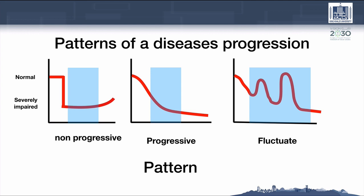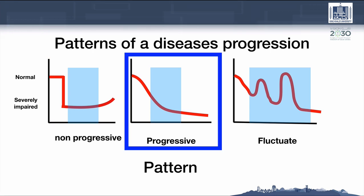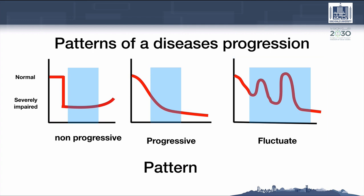You also need to learn about the pattern of disease progression — after the disease started, how would it behave? Disease can be non-progressive or static, meaning it won't really change, and may later start to improve. Diseases may continue to progress in a progressive pattern. Diseases also may fluctuate and change from normal to impairment and then back to normal, or change of variable severity without completely returning to normal. This is a fluctuating or variable pattern.